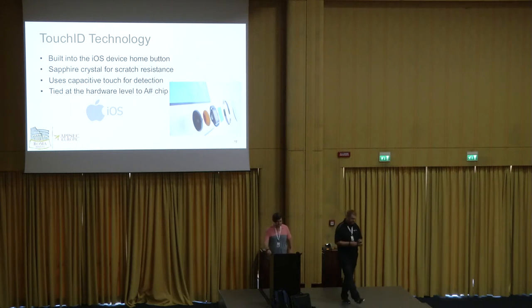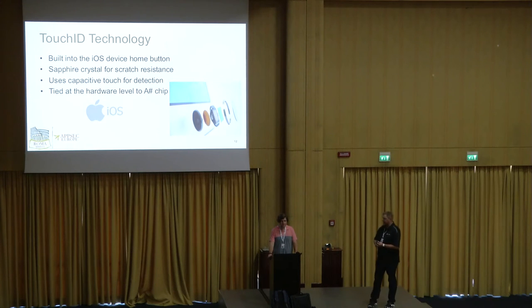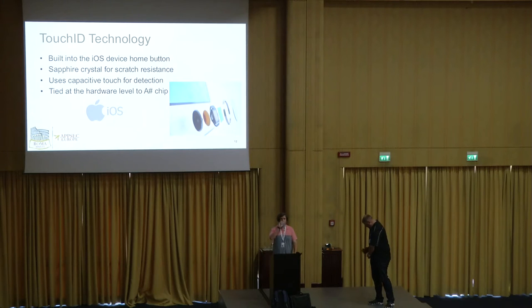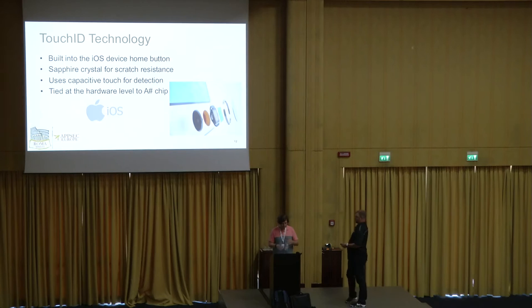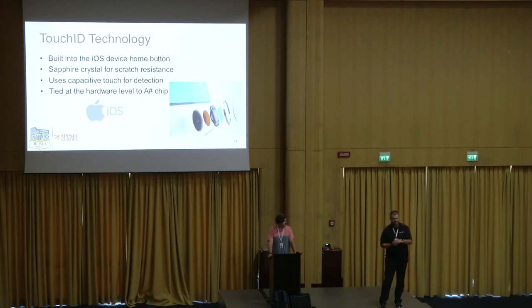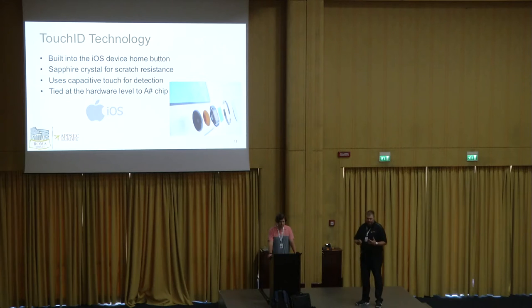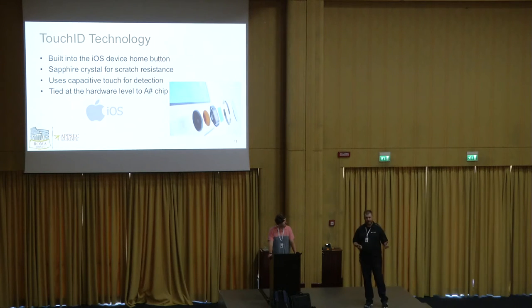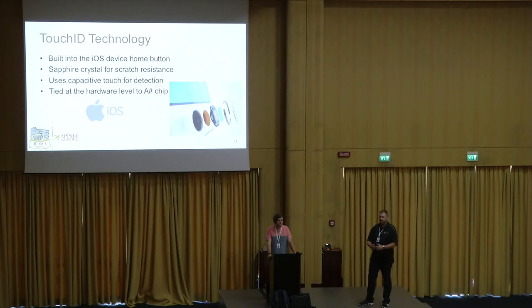Touch ID technology is pretty important. It's built into the iOS device with a sapphire crystal surface to resist scratches, and uses capacitive touch. The key is that the actual Touch ID sensor is tied at the hardware level to the chip — whatever A-series chip is on your device. The fingerprint data is some hashed form that's IP they won't release, and that data is on the chip. The chip is tied specifically to the reader itself, so you need them both — you can't just replace one or the other and get access to that hashed value.